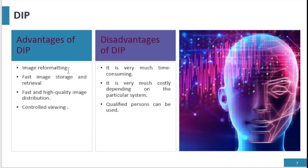Some advantages of DIP systems are: image reformatting, image storage and retrieval, fast and high quality image distribution, and controlled viewing. The disadvantages of DIP are: it is very time consuming, it is costly depending on the particular system — some software is paid and some is free, but paid software has higher quality tools and features — and a qualified person is required, as unqualified persons cannot operate DIP systems.